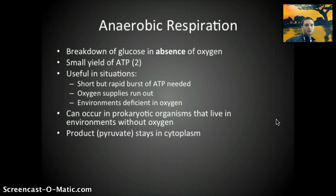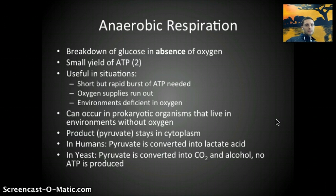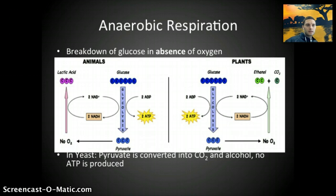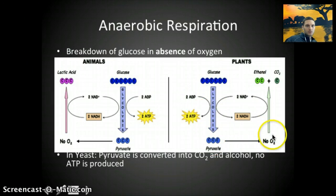In anaerobic respiration, the product of glycolysis — pyruvate — stays in the cytoplasm. In aerobic respiration, pyruvate moves into the mitochondria. In humans, pyruvate is converted into lactic acid. In yeast, pyruvate is converted into CO2 and alcohol, in which no additional ATP is produced. Looking at an image comparing animals and plants: in animals, glucose undergoes glycolysis using 2 ATP and produces pyruvate, which in the absence of oxygen becomes lactic acid. In plants, glycolysis uses 2 ATP and without oxygen produces ethanol and CO2.